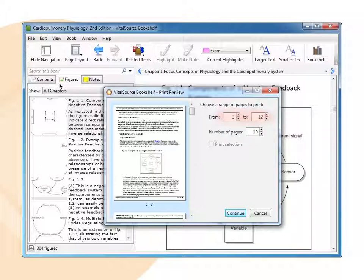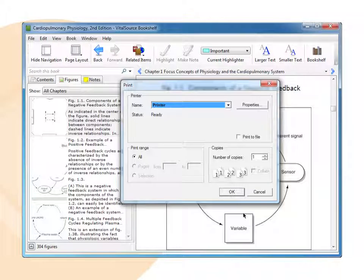Based on the copy or print restriction, the limitations will be displayed. Click Continue. Another window pops up to vary your printer and other print details. Click Print.